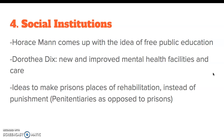Number four: social institutions — things usually funded by the government, in effect by tax dollars. Horace Mann came up with the idea of free public education, copying that from European countries. Dorothea Dix wanted new and improved mental health facilities and care. She was also a big pusher for making prisons places of rehabilitation instead of punishment — that's why many are called penitentiaries. If you're penitent, you're seeking forgiveness. The idea was to teach criminals, show them the error of their ways, so they could be rehabilitated and brought back into society.